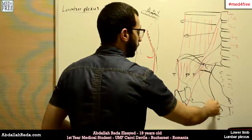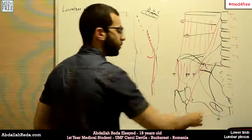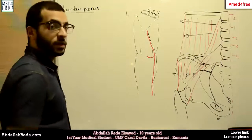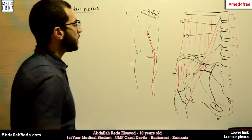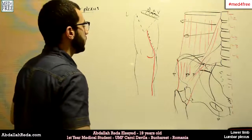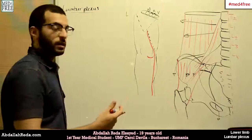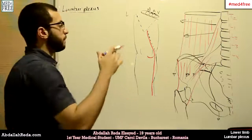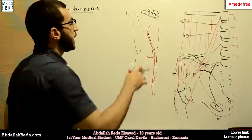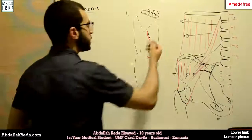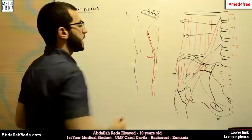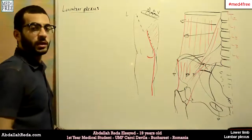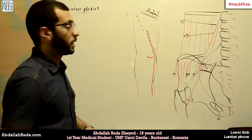The obturator nerve goes through the obturator foramen and gives two branches: an anterior branch and a posterior branch. The anterior branch passes between adductor longus and adductor brevis and gives a cutaneous branch that innervates the medial aspect of the skin of the thigh. The posterior branch passes through adductor magnus and adductor brevis.